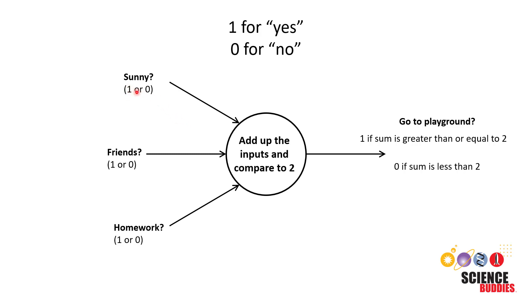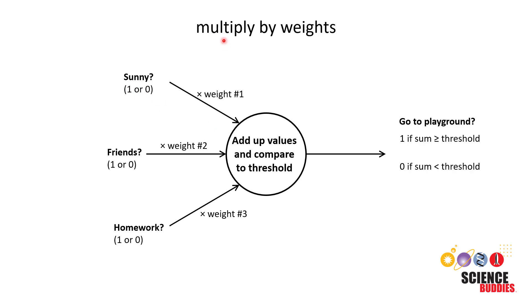So rather than just counting each input as one or zero, we're going to multiply each input by a weight, and that weight can be different for each input. We are then going to add up all of those values and compare to some threshold value to decide our output. The output will be one if the sum is greater than or equal to the threshold and will be zero if the sum is less than the threshold. Next we're going to walk through a concrete example.